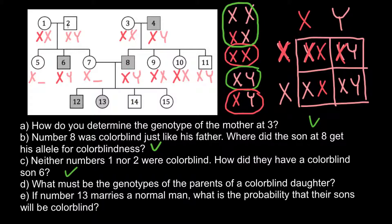Question D: what must be the genotypes of the parents of the colorblind daughter? On the pedigree, there is only one colorblind female, so her genotype must be two defective X chromosomes — both chromosomes are defective. These are her parents. Her father would give one defective X chromosome. But another defective X chromosome must come from the mother's side. So we can say for sure that the mother would be heterozygous — one normal X chromosome and one defective X chromosome.